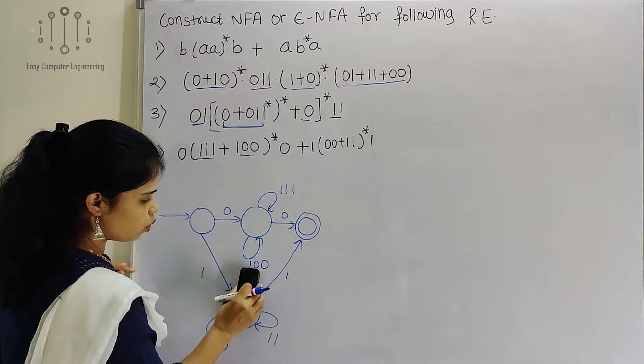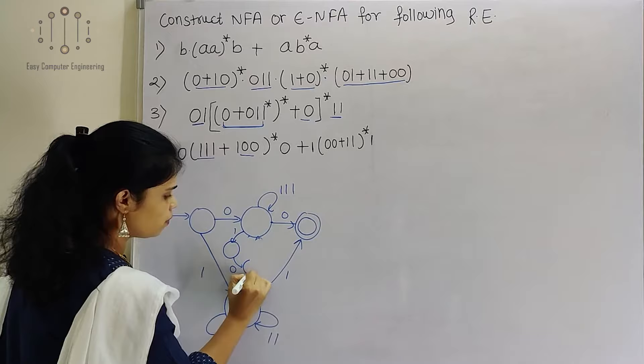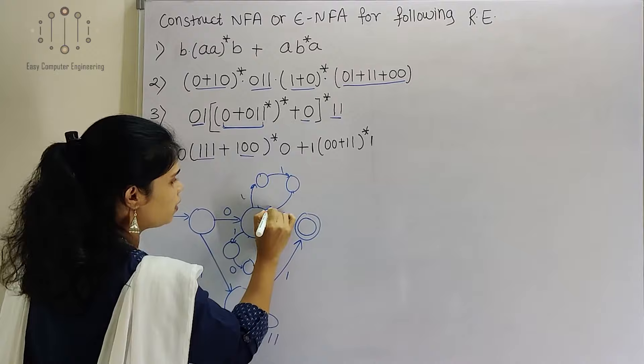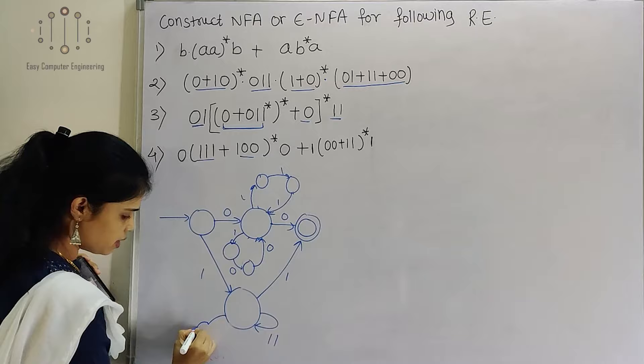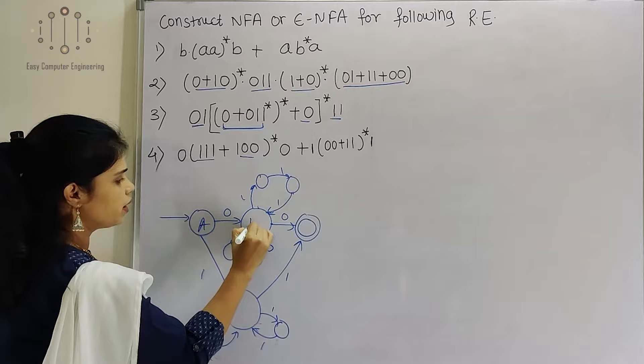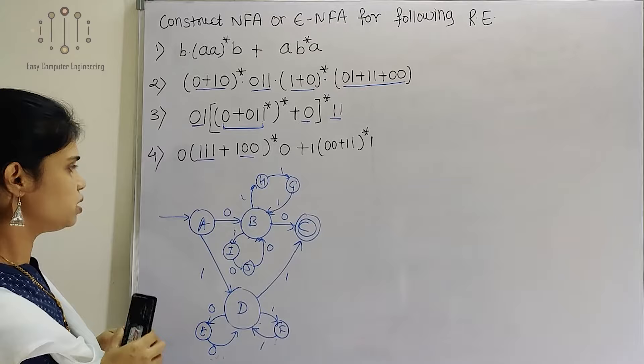Now we split the parts. Showing 1,0,0 as 1, then 0, then 0. And 1,1,1 as 1, then 1, then 1. Drawing step by step gives the final correct answer. Then 0,0, and same here we show 1 and 1. We rename every state. This will be our final epsilon-NFA — though right now there are no epsilon transitions, so this is an NFA.